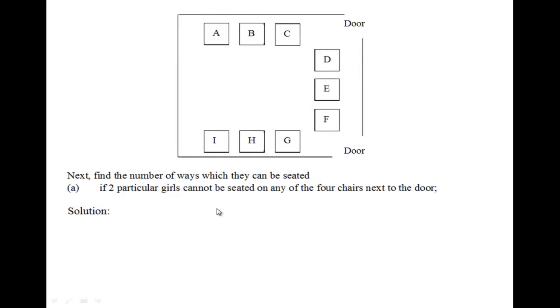Next, find the number of ways which they can be seated if two particular girls cannot be seated on any of the four chairs next to the door. Let us first identify the four chairs next to the door. They are C, D, F, and G. So if these two girls cannot be seated next to the door, then we only have A, B, E, H, and I to place the two girls.